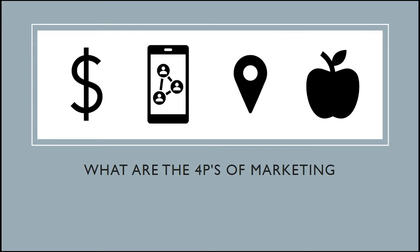What are the four Ps of marketing? They are price, promotion, place, and product. The product is what the company sells. Price refers to how much you charge for your product or service. Place is another word for location, or in the case of international business, locations and logistics. Promotion is the step where you advertise your product and potentially generate revenue.